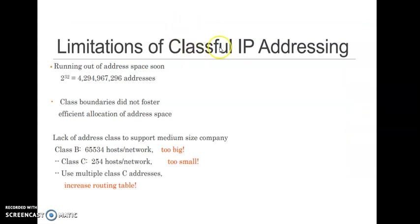Classful IP Addressing means different classes of IP addresses. Basically there are 5 classes of IP addresses, starting from Class A, B, C, and D. So what are the limitations of Classful IP Addressing? The first and foremost limitation is running out of address space soon.